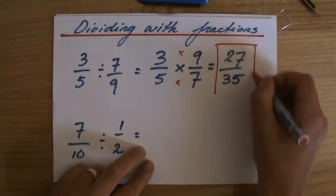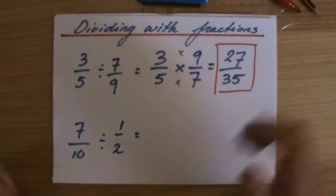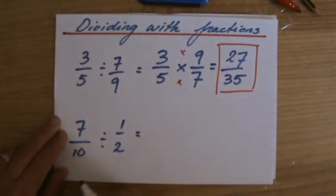But always take care when you are writing your final answer. Is that it? Can I simplify it? No, you can't. 27 over 35.